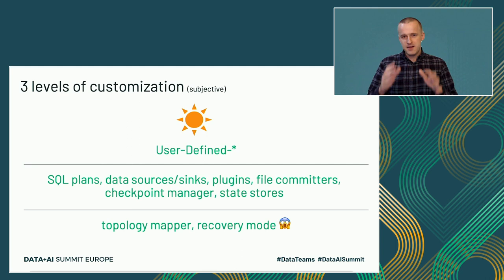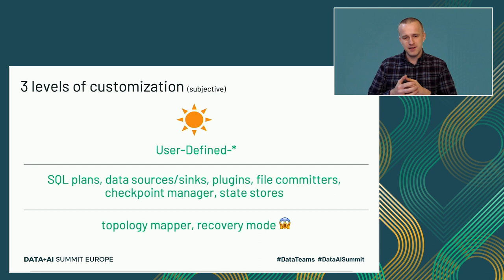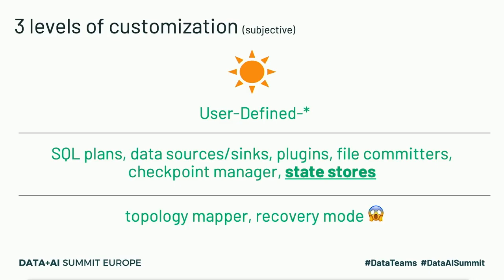And there is also the third layer, which I call the scary layer, because you can still customize it but it's very hard to find resources on the internet about topology mappers or recovery modes. So it requires you to dig a bit more into Apache Spark internals.